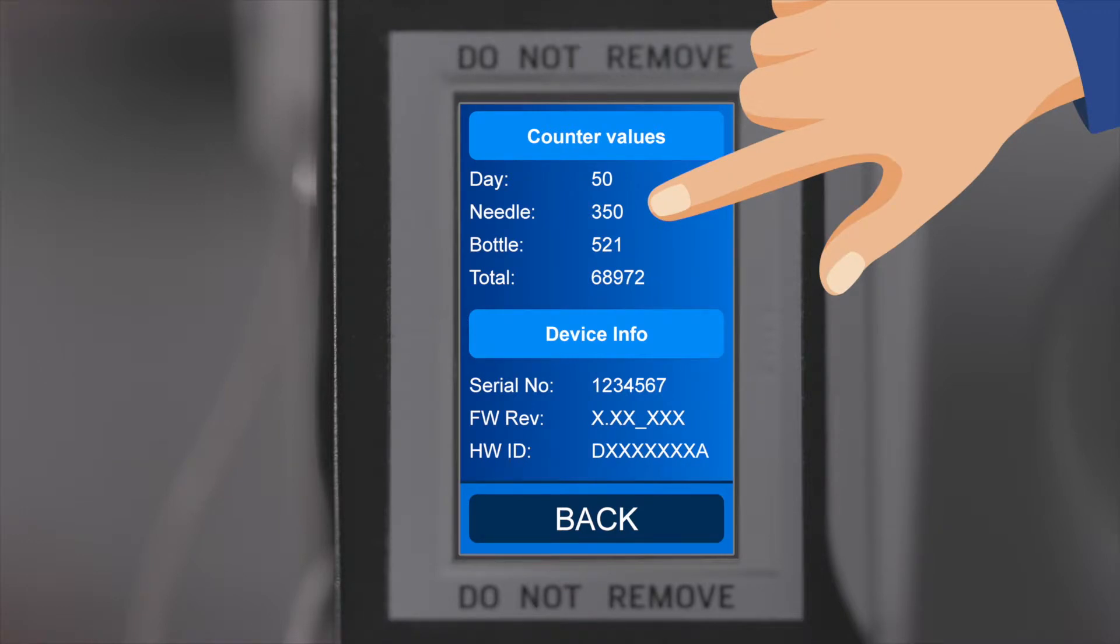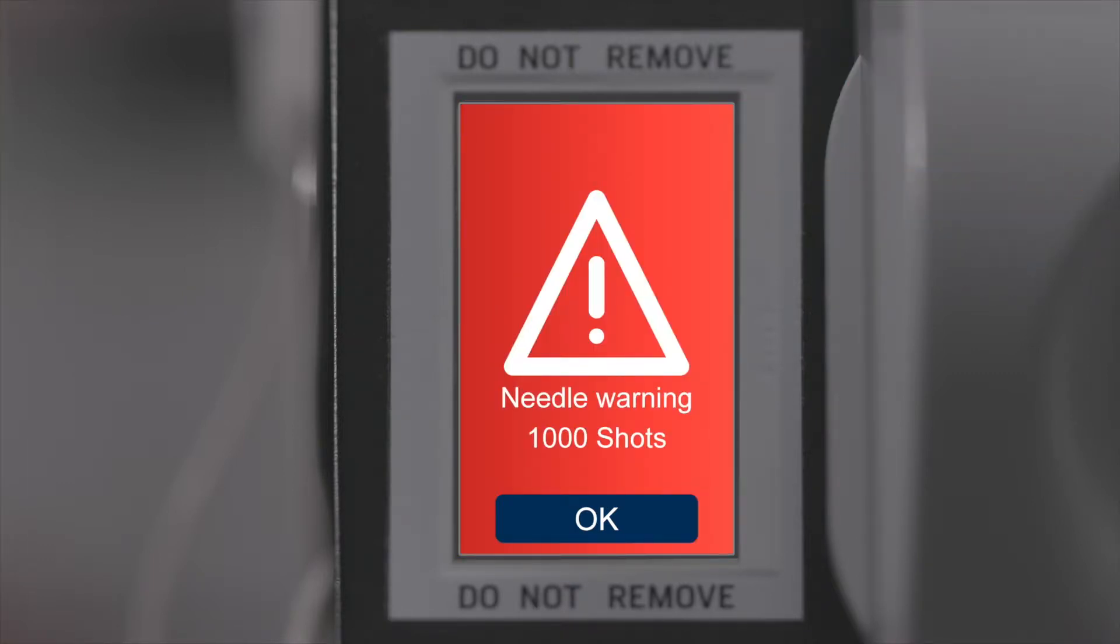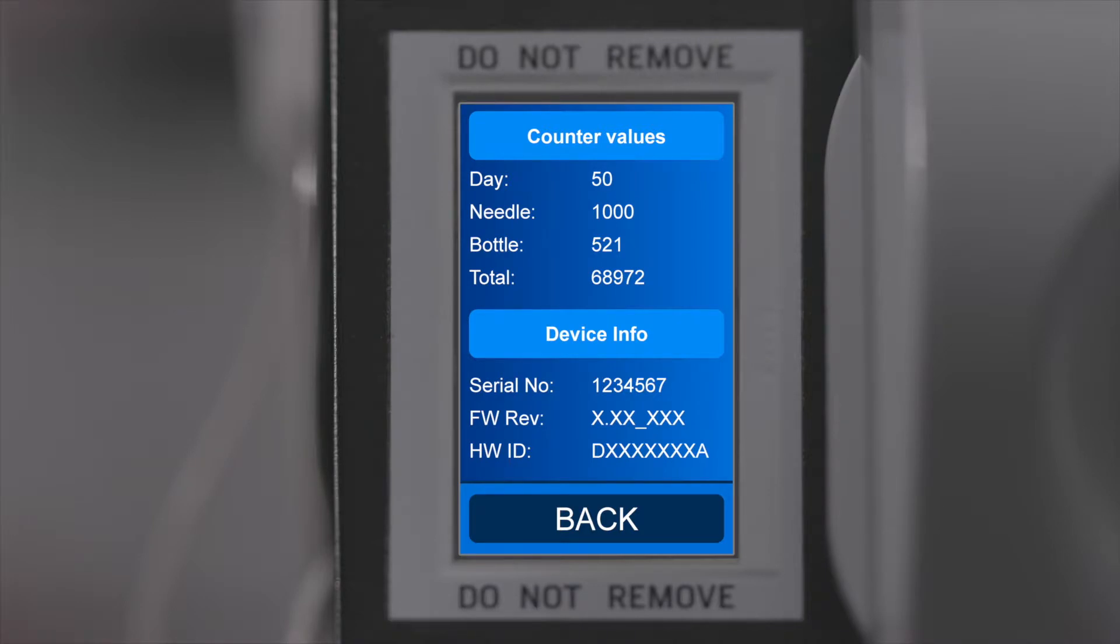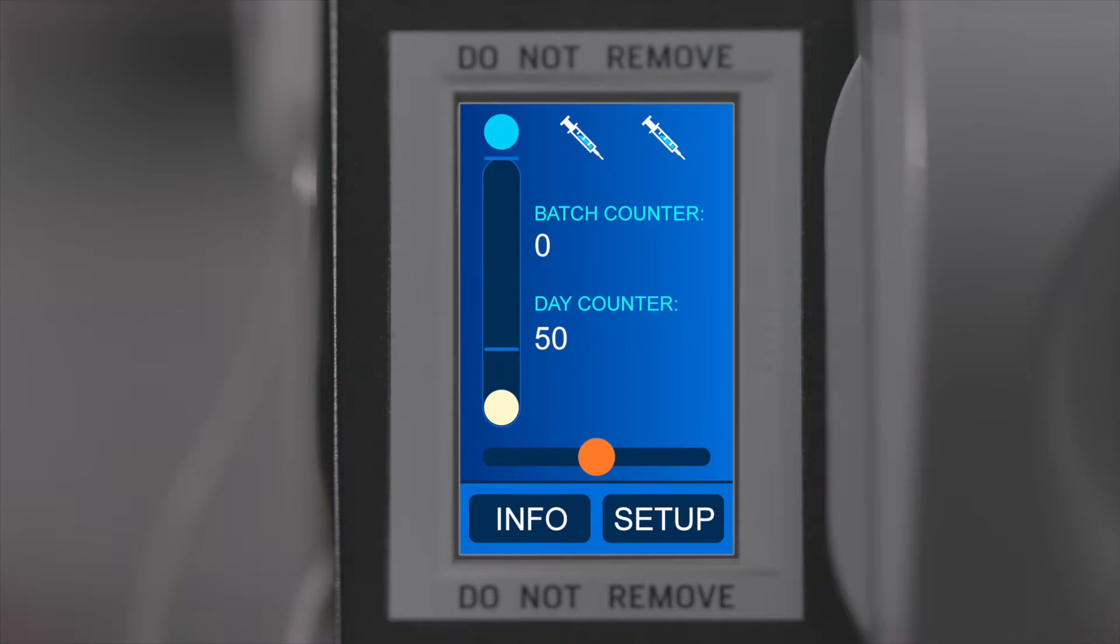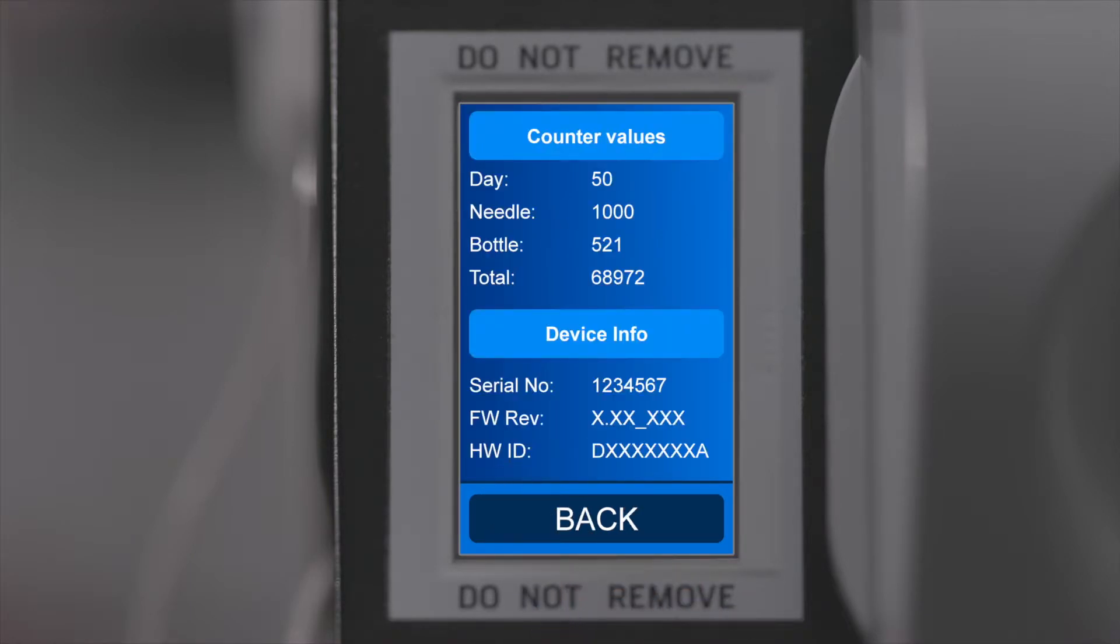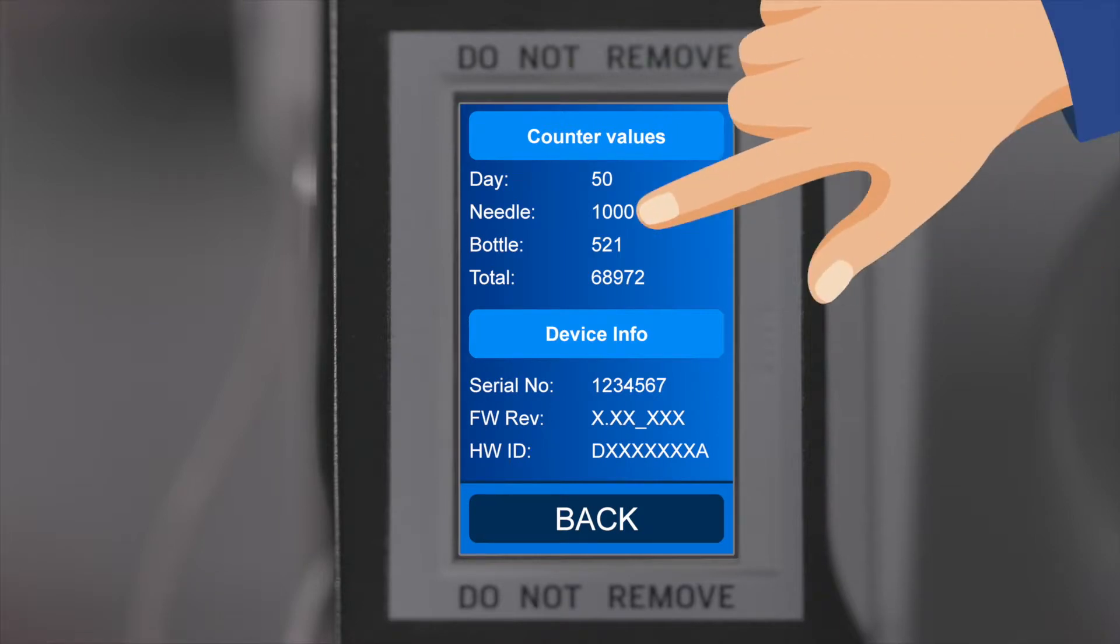Needle Counter indicates the number of injections given since the last reset. After 1000 injections the needle counter will request a needle change which is indicated on the touch display. Confirm the warning by touching OK. Change the needle and reset the counter to 0 to continue operation. Without a reset the counter will count the next 1000 injections until a warning appears again. To reset the counter simply touch it on the display.